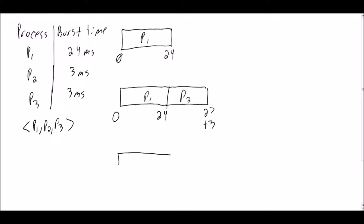And then finally, we will go ahead and schedule process 3, the last process. Process 3 also has a burst time of 3, putting us at time 30.